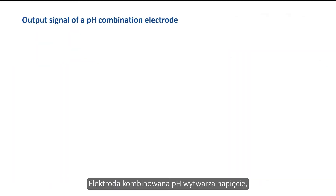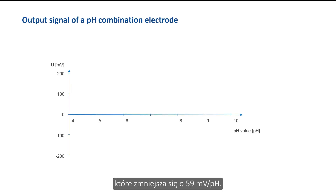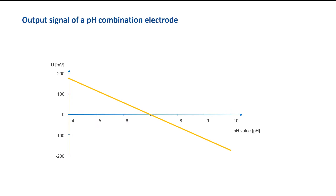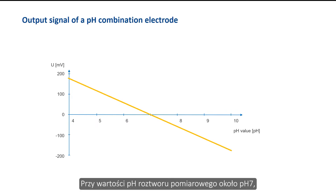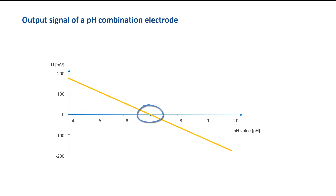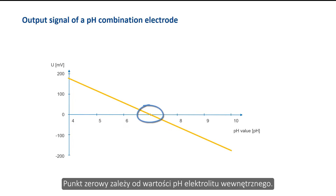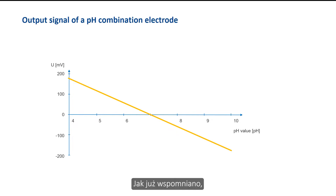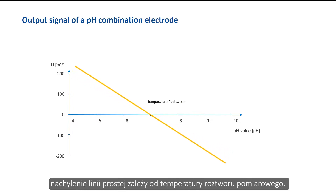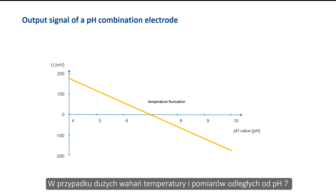The pH combination electrode outputs a voltage which decreases by 59 mV per pH unit. At a pH value of approximately 7, the electrode outputs 0 mV. The zero point depends on the pH value of the inner electrolyte. The slope of the straight line depends on the temperature of the measuring solution. In case of large temperature fluctuations and measurements far from pH 7, temperature compensation may be required.